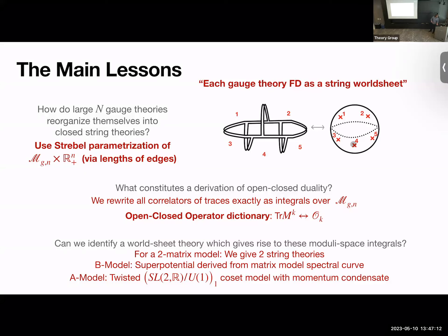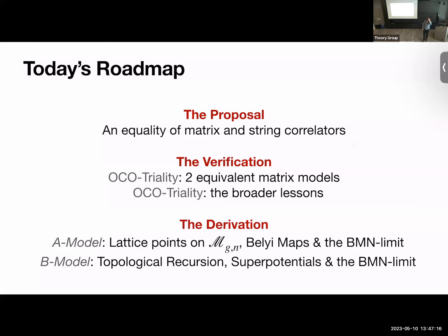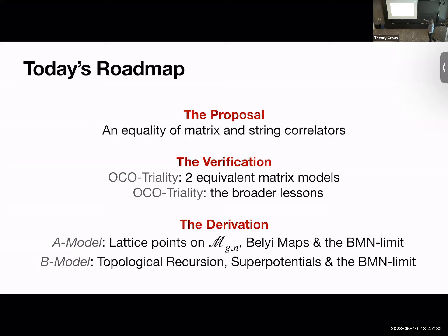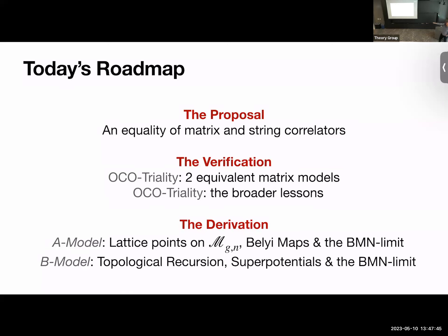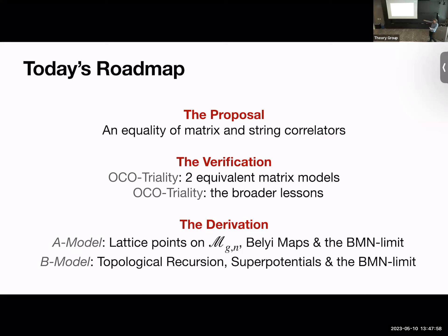Let me give you something very concrete. The proposal asserts an equality of two correlators — one on the matrix side and one on the string side. We're going to verify this proposal using, in disguise, the tool of open-closed-open triality. We'll first look at it in a very down-to-earth way as the equivalence of two matrix integrals — a very well-defined thing — and then step back and think about what the manipulations mean.